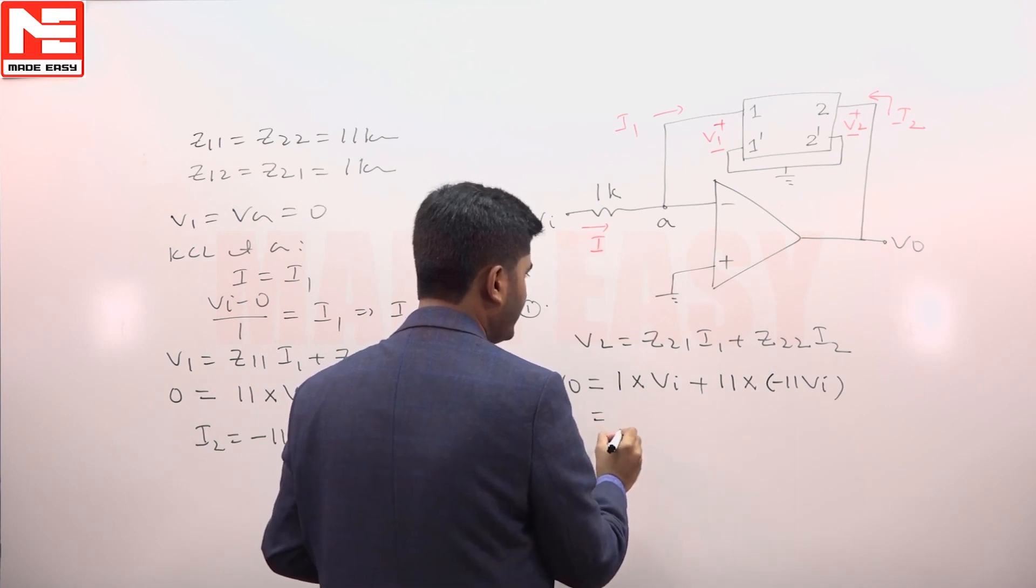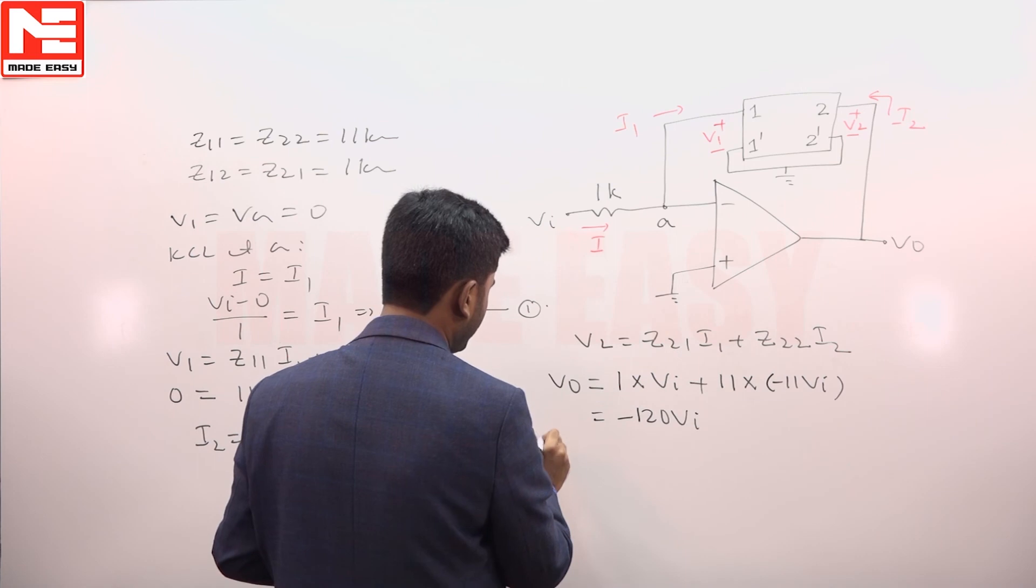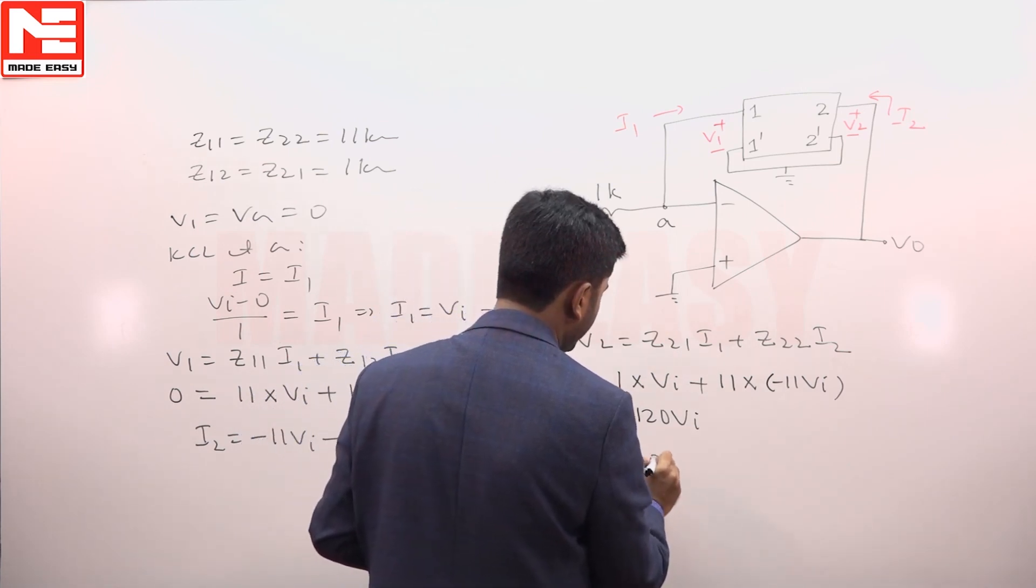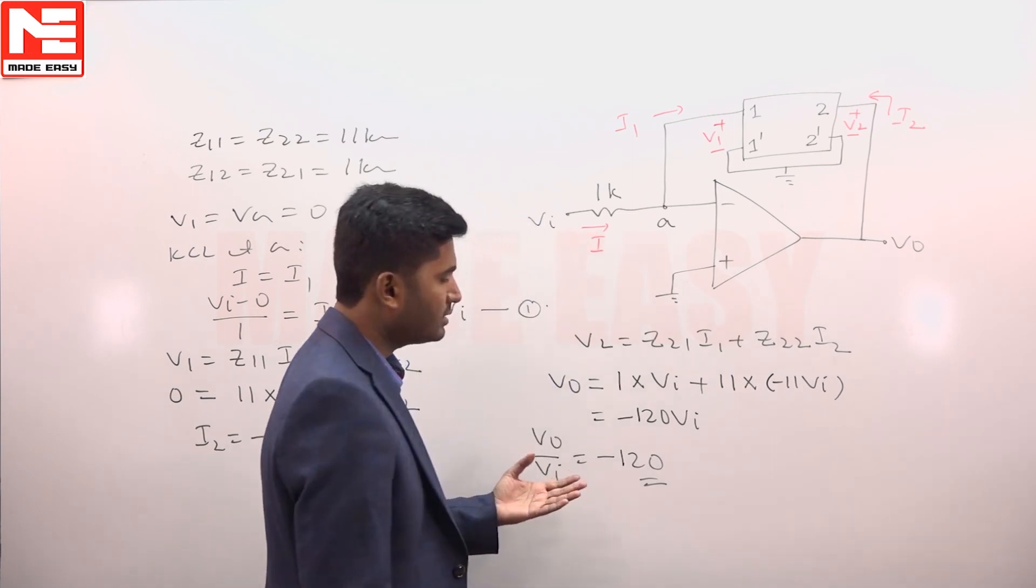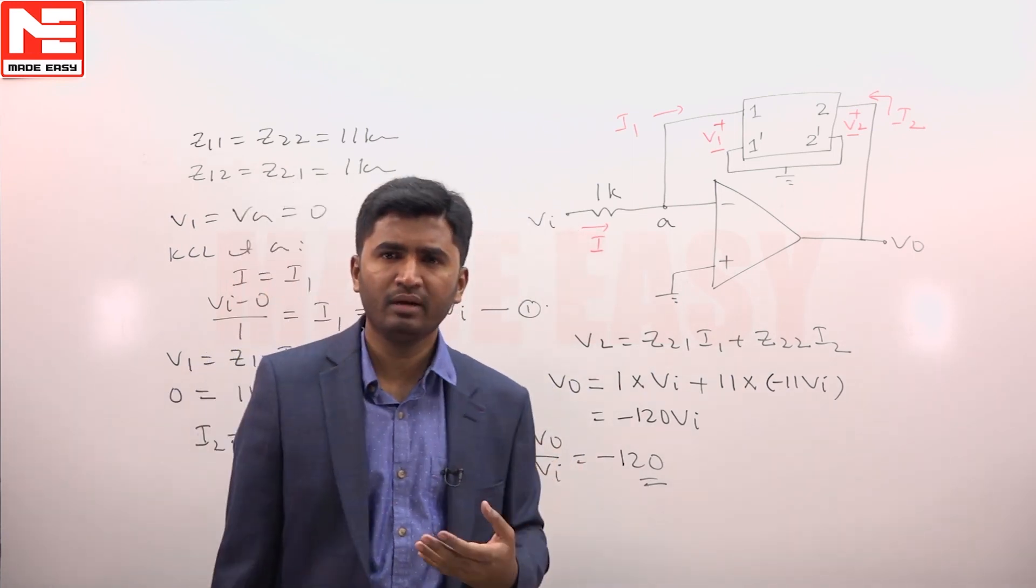Or I get from here V 0 upon V i equal to minus 120. Hence in this circuit gain V 0 by V i is minus 120, which is option D.